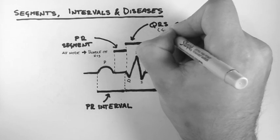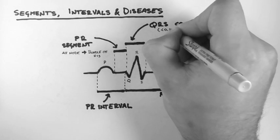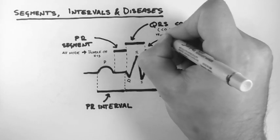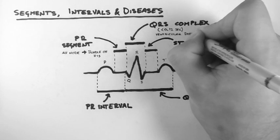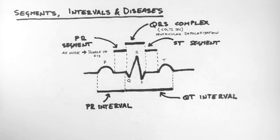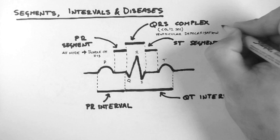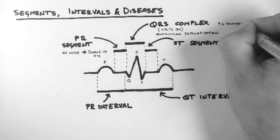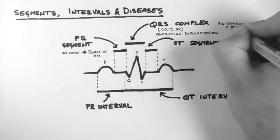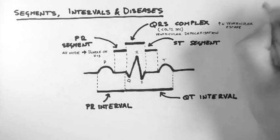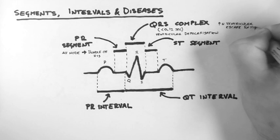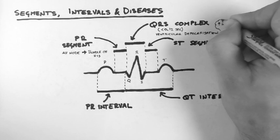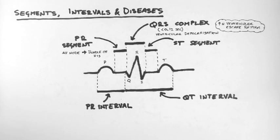A normal QRS complex should be less than 0.12 seconds in duration. It's associated with ventricular depolarization. If the QRS complex is longer than 0.12 seconds, we call this QRS widening and it usually suggests a ventricular escape rhythm, which is a rhythm that originates within the ventricles rather than the SA node, or it suggests a bundle branch block.